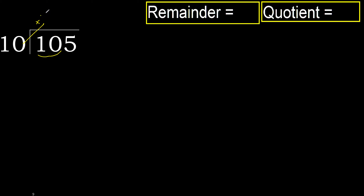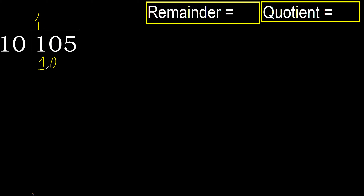10 multiplied by 2 is 20 — it's greater. Multiply by 1 is 10 — it's not greater. Okay, subtract. 10 minus 10 equals 0.